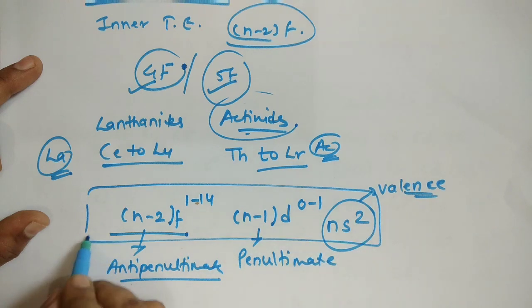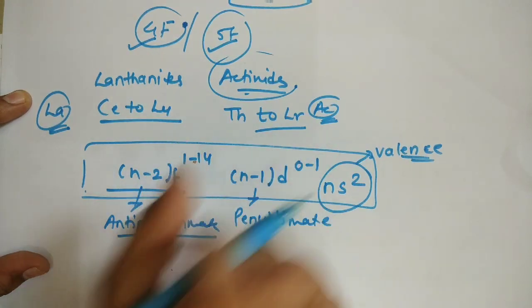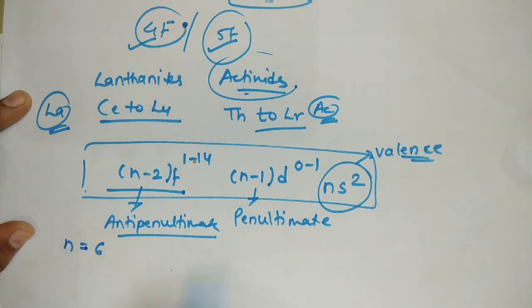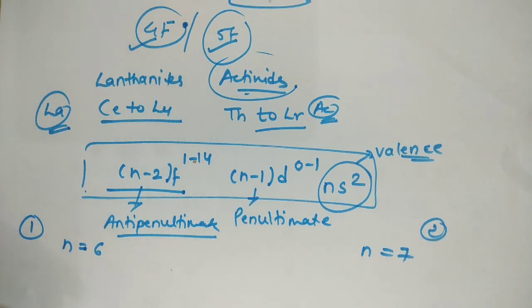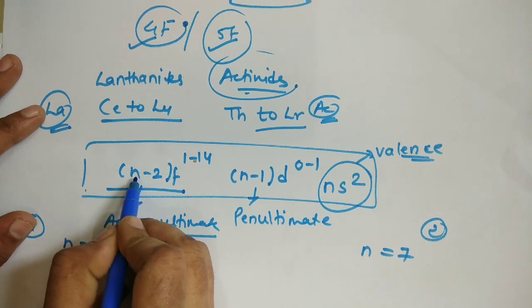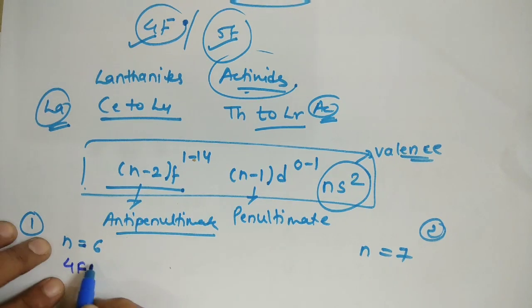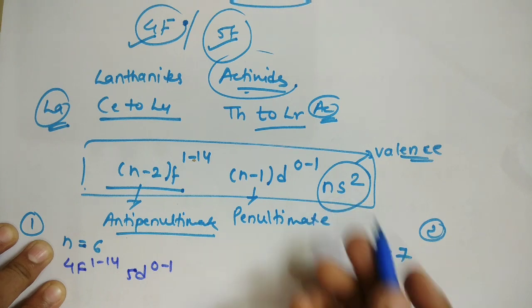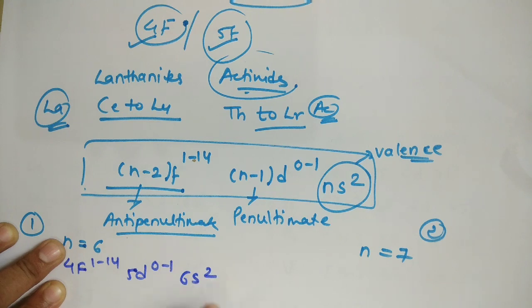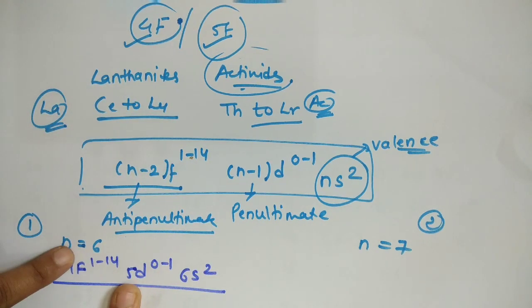Now let me apply this general electronic configuration for n equals 6. For the lanthanide series with n equals 6: n minus 2 gives 4f^1-14, n minus 1 gives 5d^0-1, and the valence shell is 6s^2. So the general electronic configuration for lanthanides is 4f^1-14, 5d^0-1, 6s^2.